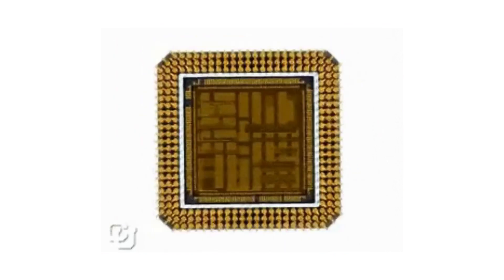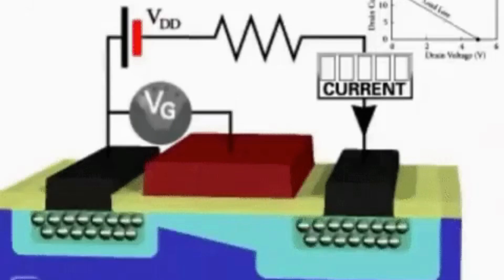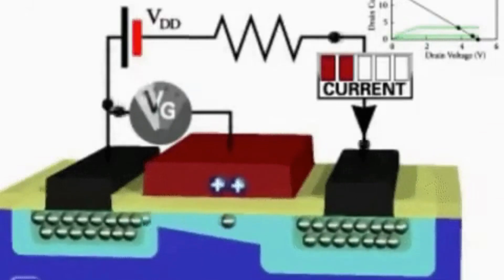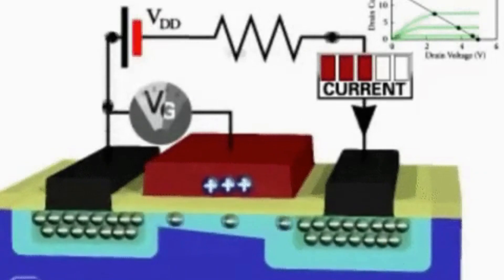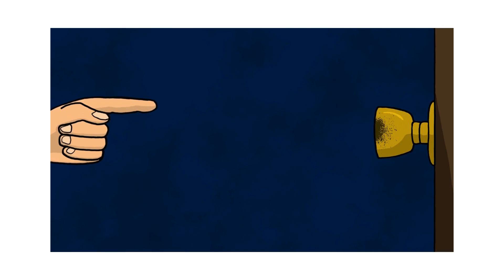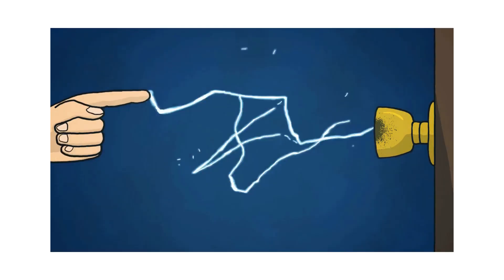The metal oxide semiconductor field-effect transistor, or MOSFET, has an extremely high input gate resistance with the current flowing through the channel between the source and drain being controlled by the gate voltage. Because of this high input impedance and gain, MOSFETs can be easily damaged by static electricity if not carefully protected or handled.